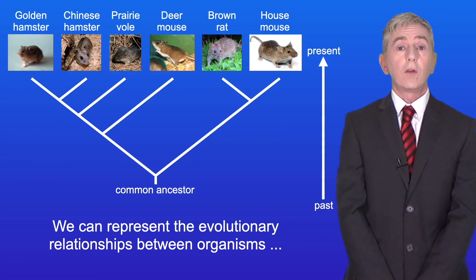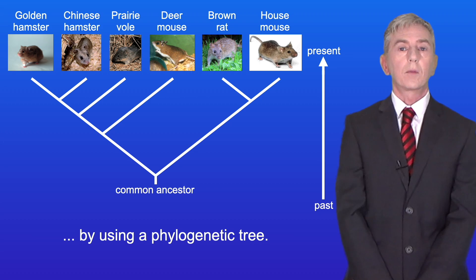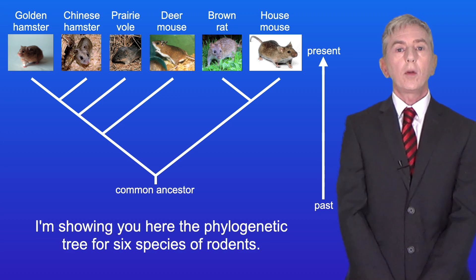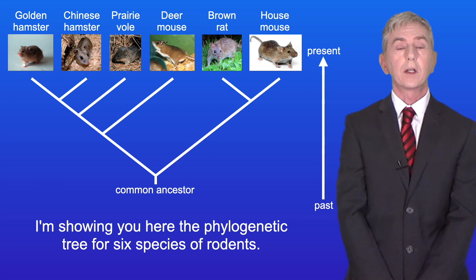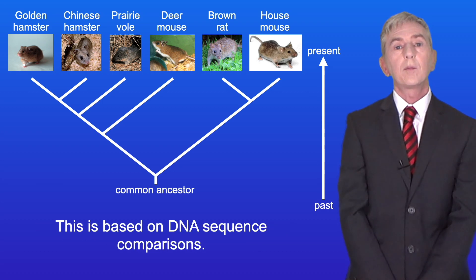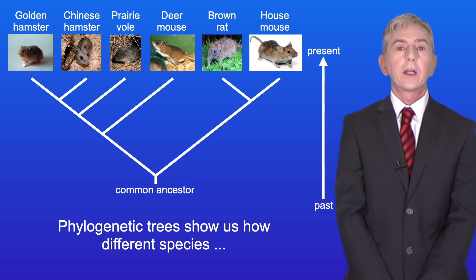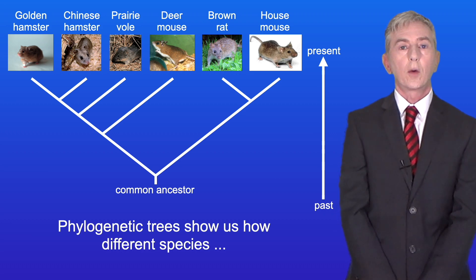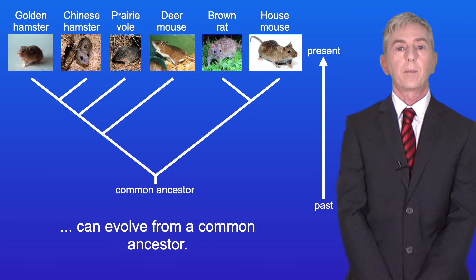We can represent the evolutionary relationships between organisms by using a phylogenetic tree. I'm showing you here the phylogenetic tree for six species of rodents. This is based on DNA sequence comparisons. Phylogenetic trees show us how different species can evolve from a common ancestor.